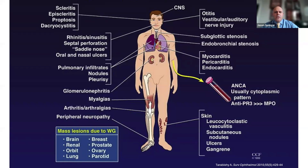GPA can affect the heart, either causing inflammation in the actual heart muscle itself or the lining around the heart, typically presenting as chest pain. It can affect any part of the airways — the trachea or the bronchioles going into the lungs — generally presenting as shortness of breath and causing narrowing of these airways. It can affect the ears, presenting as either ear pain or hearing loss, very similarly to an ear infection. And less commonly, it can affect the brain, which is fairly dramatic when it occurs — things like cognitive changes, seizures, or strokes.